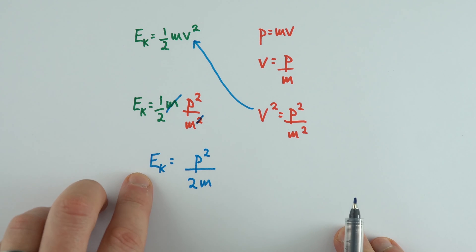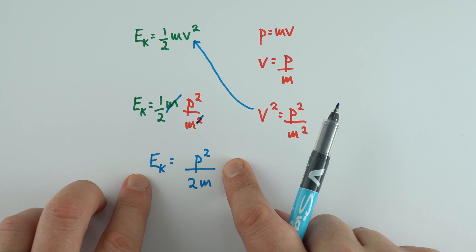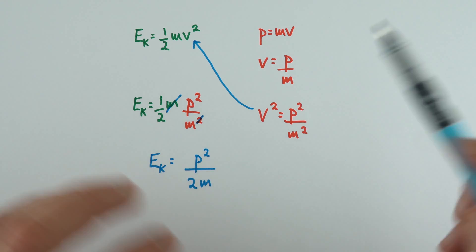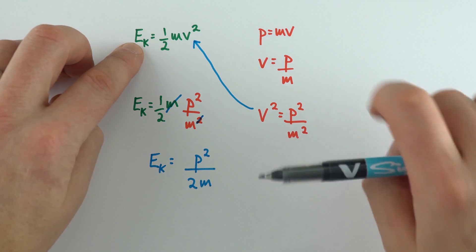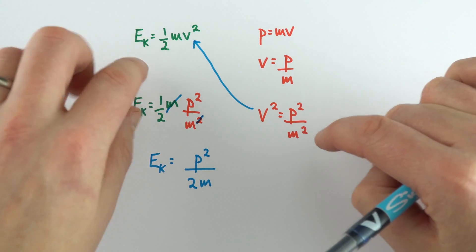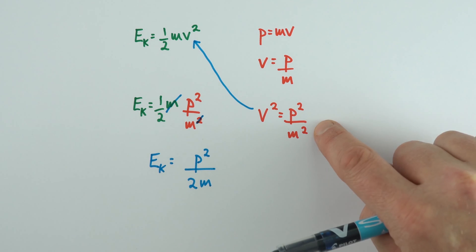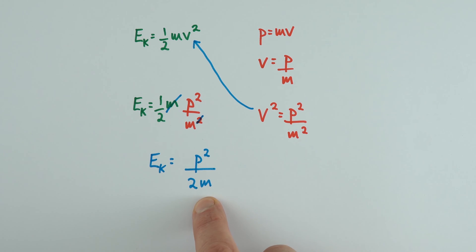So what we can now do is relate the kinetic energy of an object to its momentum. But this is not the only way to derive that equation. All we're doing when we're deriving new equations is starting with something we know, doing a bit of rearranging, maybe replacing one term with something else. But there's another way that we can do this.